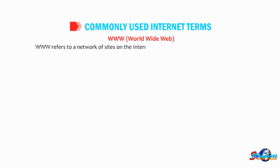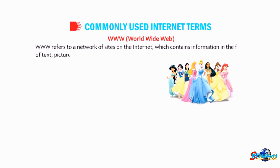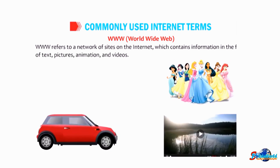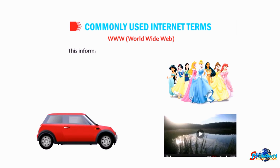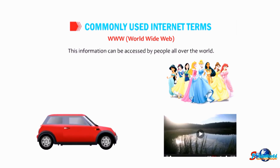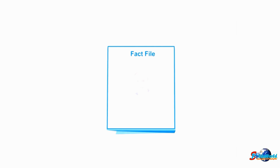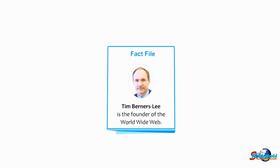Let us talk about commonly used internet terms. WWW stands for World Wide Web. WWW refers to a network of sites on the internet which contains information in the form of text, pictures, animation, and videos. This information can be accessed by people all over the world. Tim Berners-Lee is the founder of the World Wide Web.